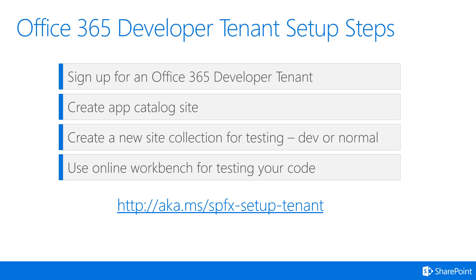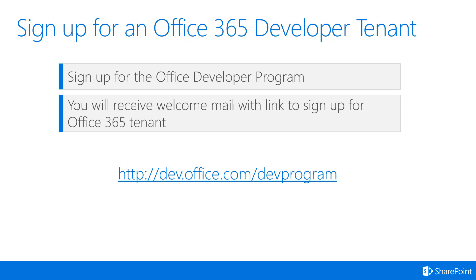Detailed setup and step-by-step guidance is available from the AKMS SPFX setup tenant URL. To sign up for an Office 365 tenant if you don't have an existing one, the easiest way is to sign up for the Office Developer Program. Go to dev.office.com/devprogram and sign up. The program registration will then send you a welcome email with a sign-up link for an Office 365 tenant.